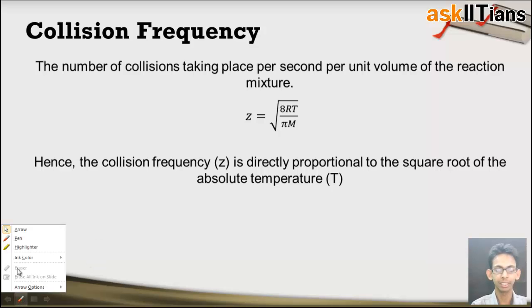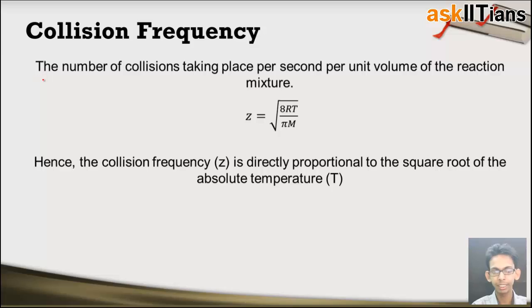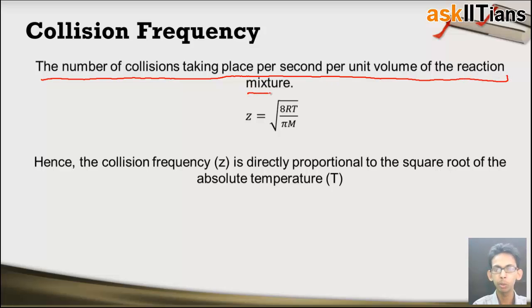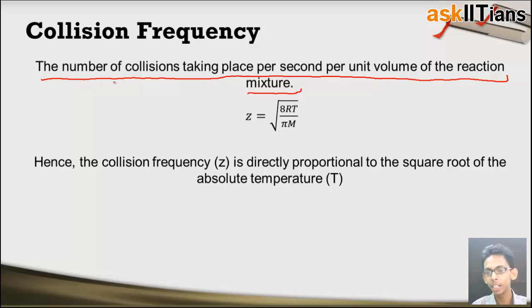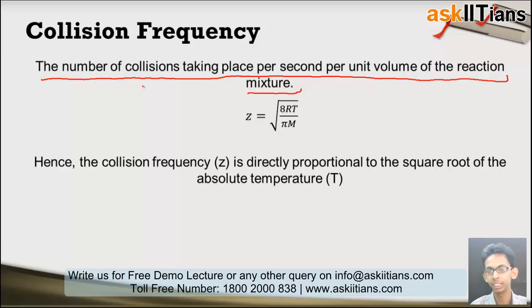The next concept is collision frequency. Collision frequency is the number of collisions taking place per second per unit volume of the reaction mixture. We know that reactants are continuously colliding with each other. Some of the collisions which are effective — of proper energy and proper orientation — are able to form products, and some are not. The number of collisions taking place per second per unit volume of the reactant mixture is known as collision frequency.